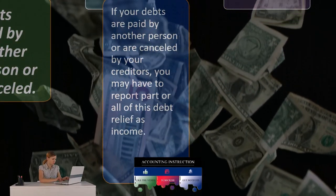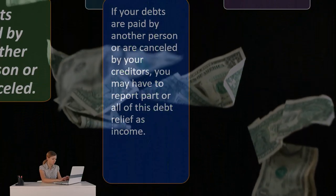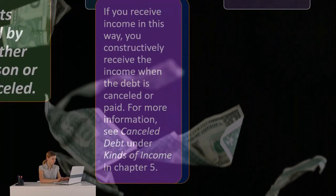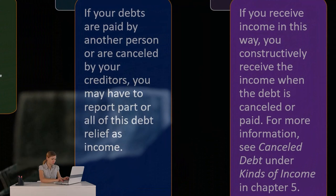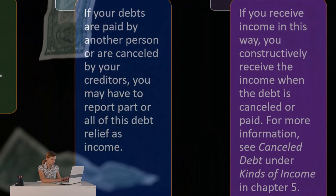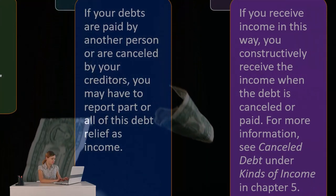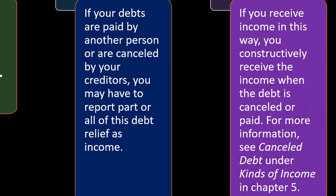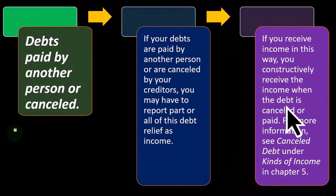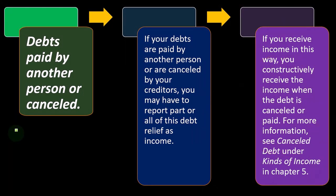So debt relief is income. There might be exceptions to when you don't have to include debt relief as income. But if you got money and then paid off the debt, it would be income. If they just skipped you getting the money and simply removed the debt, it's basically the same thing — it's income. You constructively receive the income when the debt is canceled or paid.